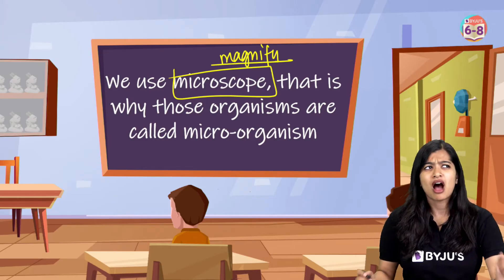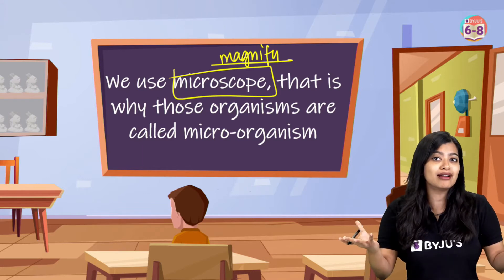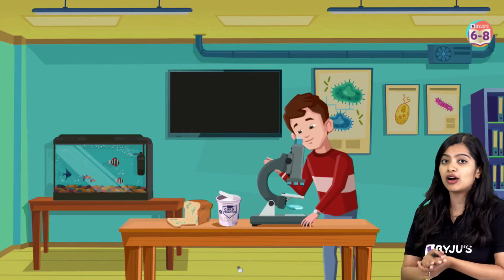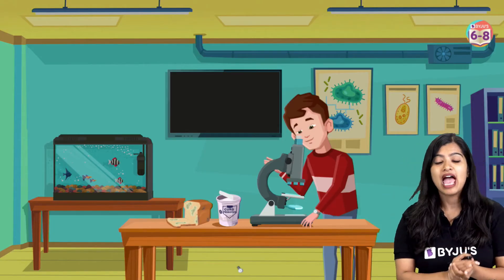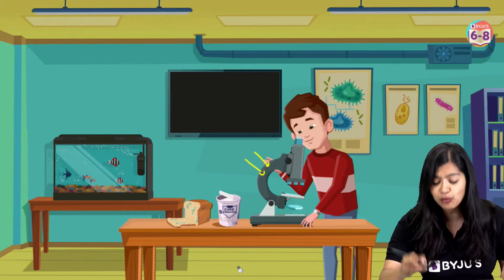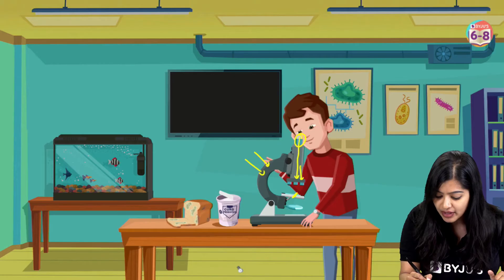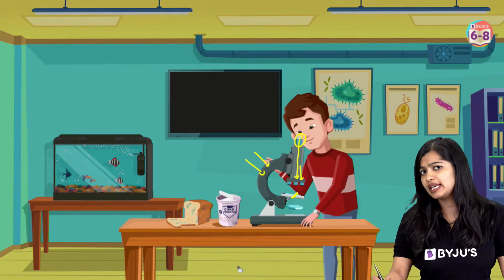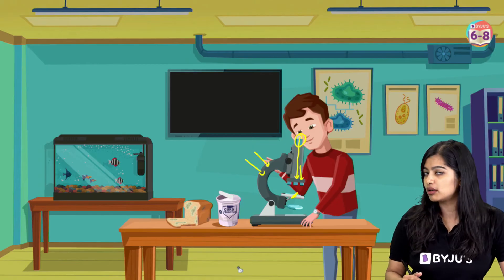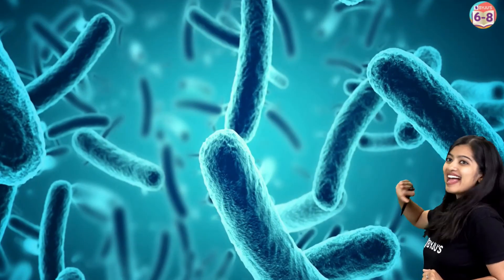Now you must be wondering how a microscope looks and how microorganisms would look under it. We have Alex here who's viewing something using this instrument — this instrument right here is a microscope. This is where we keep our eyes, and this is where we keep our sample. Now let's see what Alex is viewing — all of these are microscopic organisms, and this is how they would look like under a microscope. There are various kinds of microscopes, but mainly the microscope helps us look at these microorganisms.